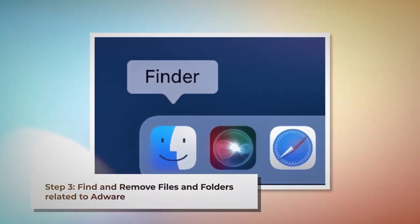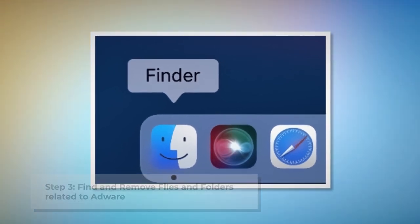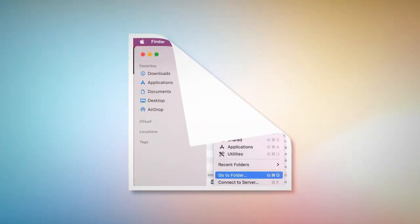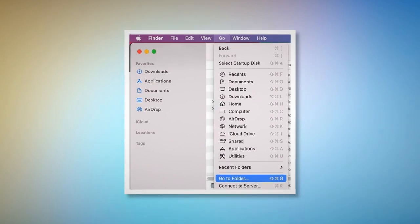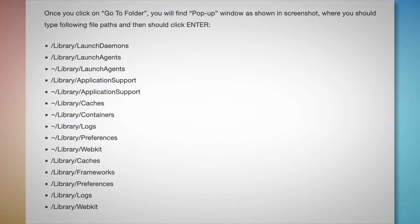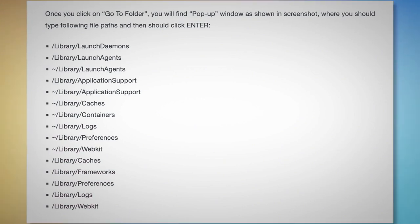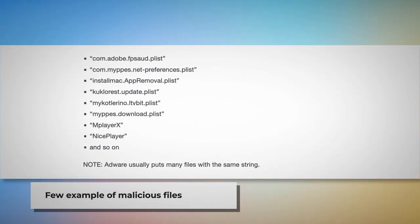Step 3: find and remove files and folders related to adware. First, make sure you are in the Finder window. Once you're there, click Go at the top menu bar of your Mac and then Go to Folder on the drop-down menu. In the pop-up window, type file paths such as Library/LaunchDaemons, Library/LaunchAgents, Library/ApplicationSupport, and so on. Look for suspicious or malicious files and move them to trash. Note that adware usually puts many files with the same string.